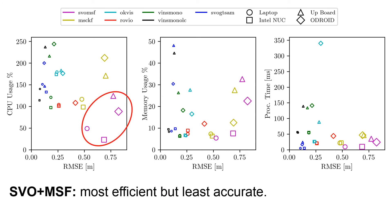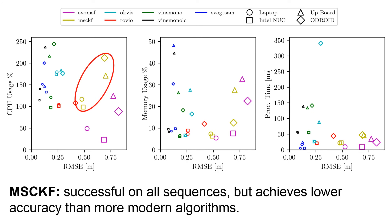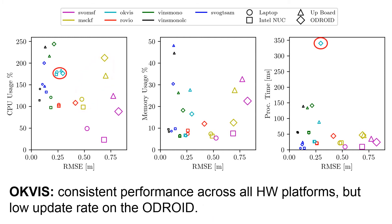SVO plus MSF was the most efficient but least accurate algorithm. MSCKF was robust and successful in all of the sequences, but achieved lower accuracy than modern VIO algorithms. OcViz gave very consistent performance across all hardware platforms, but suffered from a very low update rate on the Odroid.